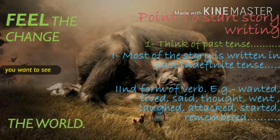So what to do? Here are some second forms to remember: wanted, leaved, said, thought, went, laughed, attacked, started, remembered — these verbs are used in past tense stories. When it is a negative sentence, use: 'he did not want,' 'he did not leave,' 'he did not say,' 'he did not think,' 'he did not go,' 'he did not laugh.' Remember that with 'did not,' you use the first form of the verb.